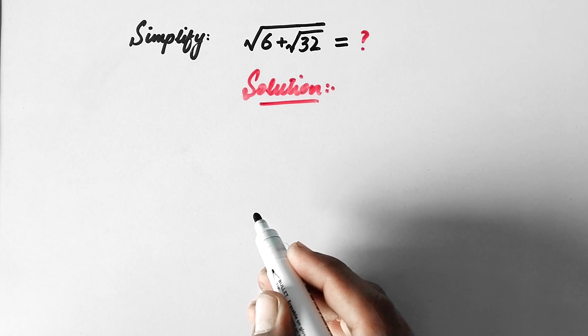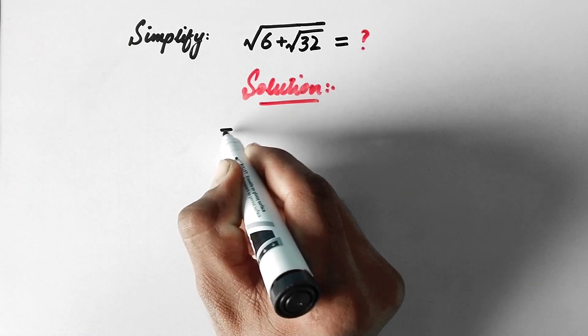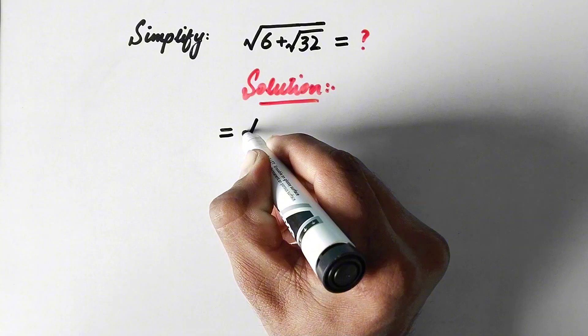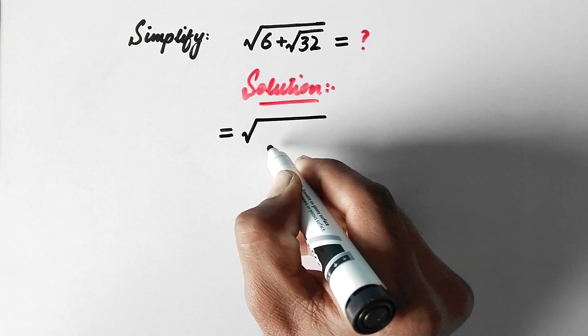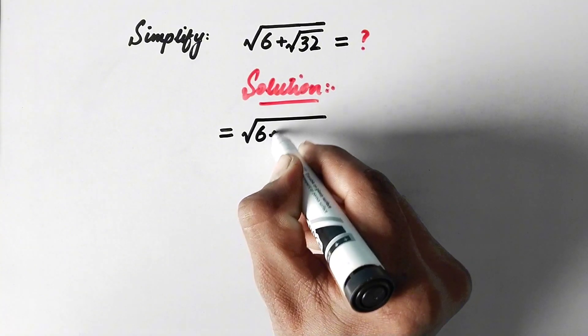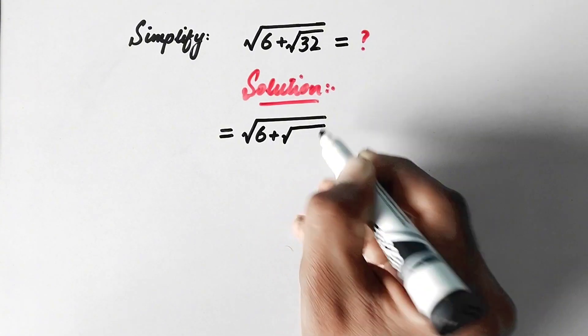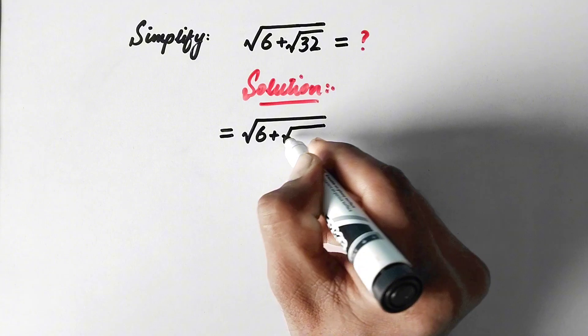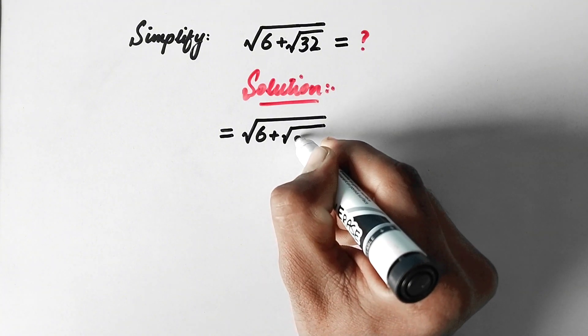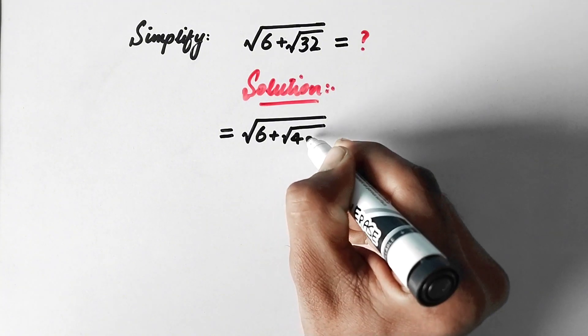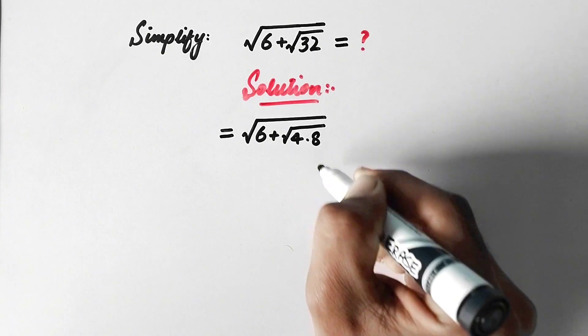In the first step we will write √6 + √32 can be expanded as √6 + √(4×8).